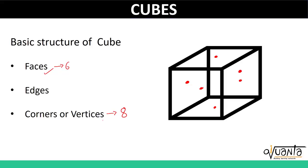Now coming to edges: an edge is formed when two faces of a cube coincide. So this is one face, this is one face — when these two coincide, this is the edge that is formed. Similarly, this is an edge, then this is an edge, then this is an edge. So likewise, a cube has got 12 edges, which can be represented by these red zigzag lines.